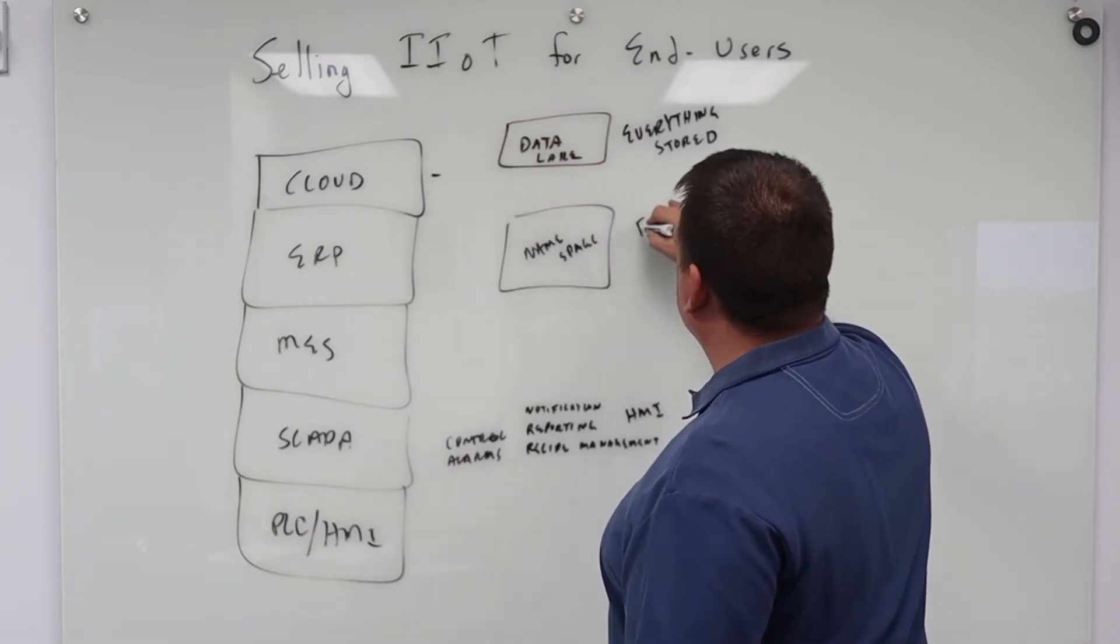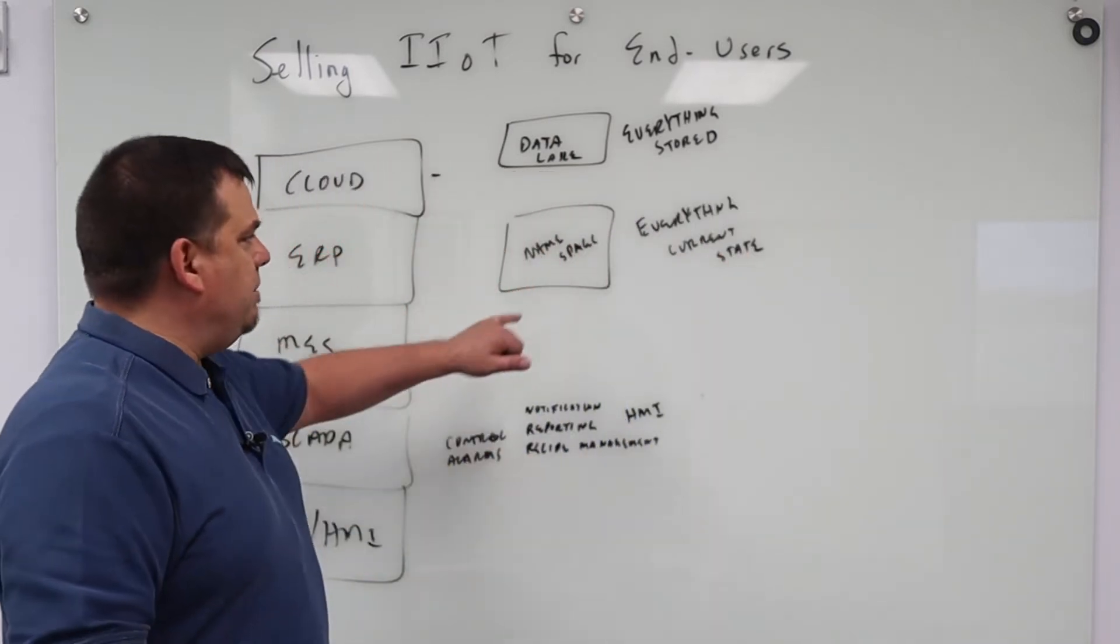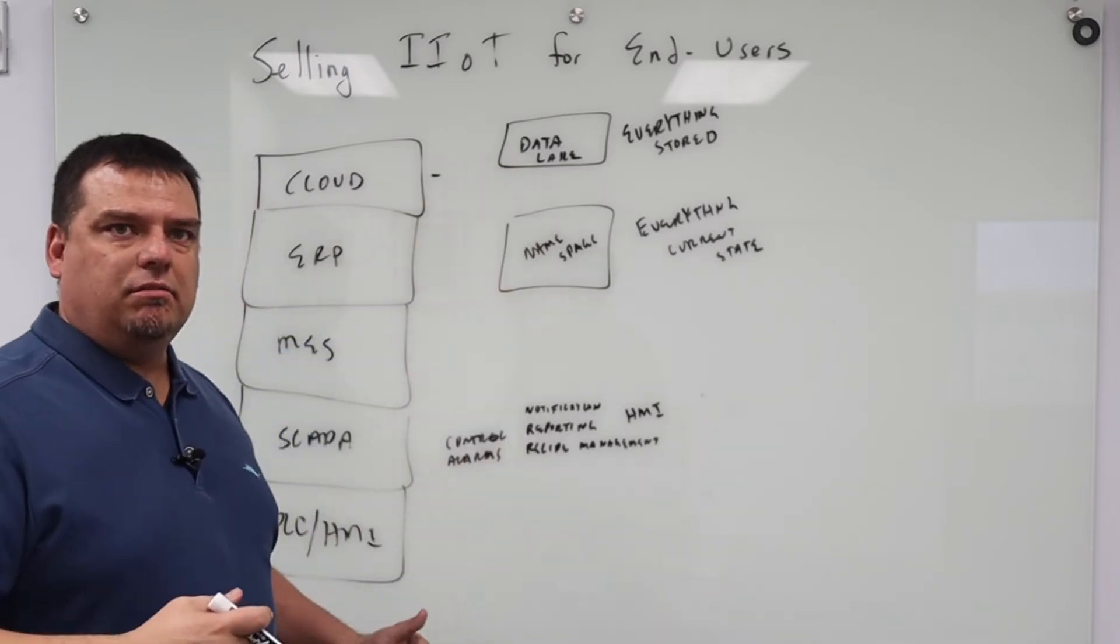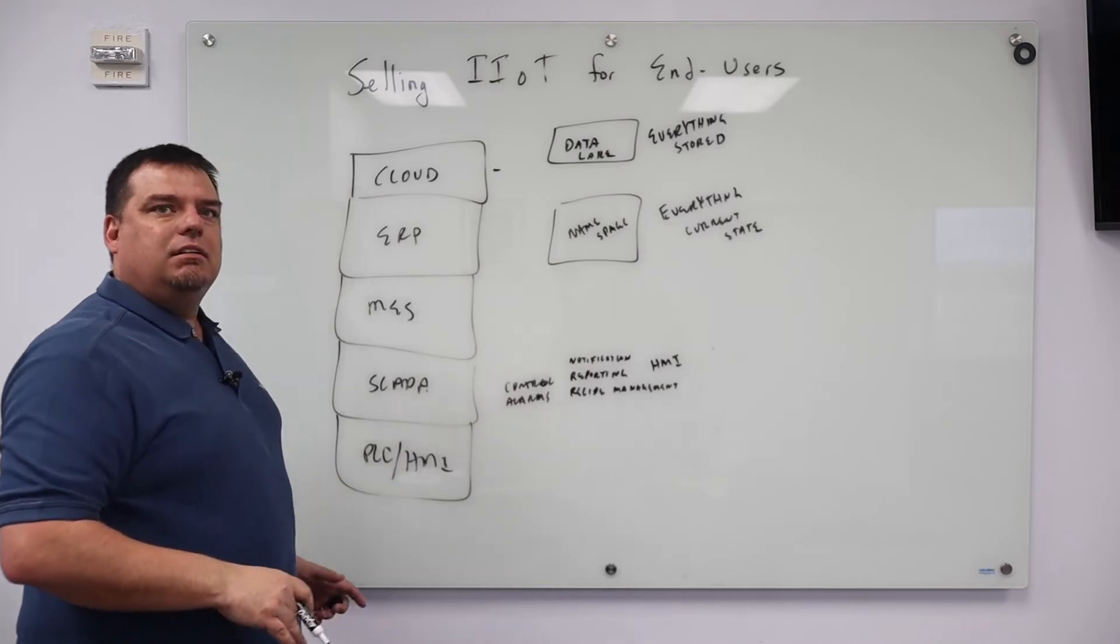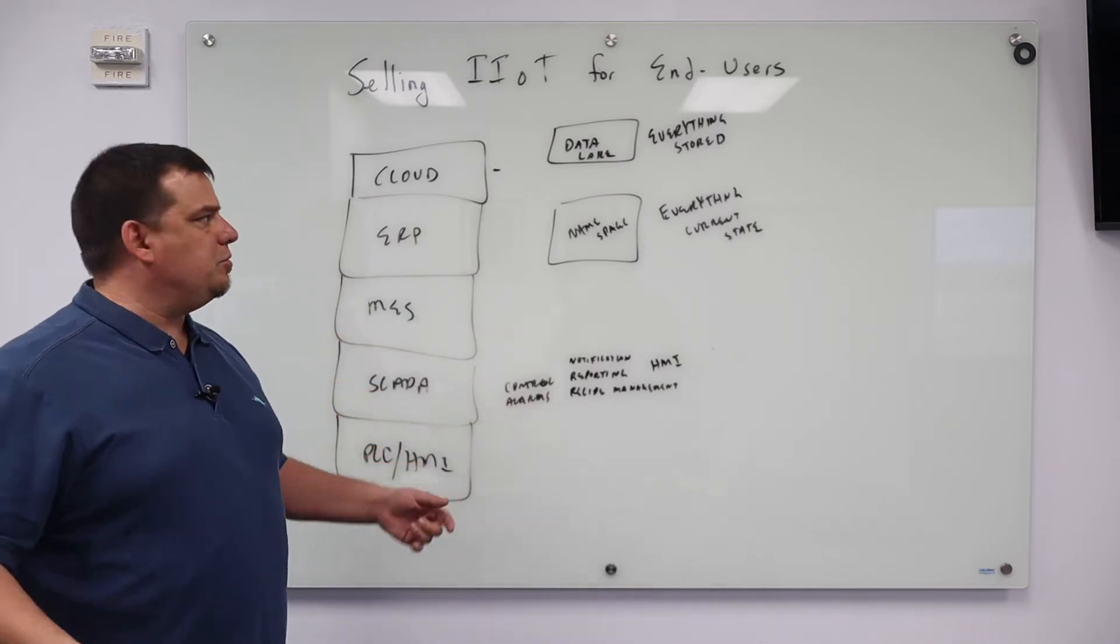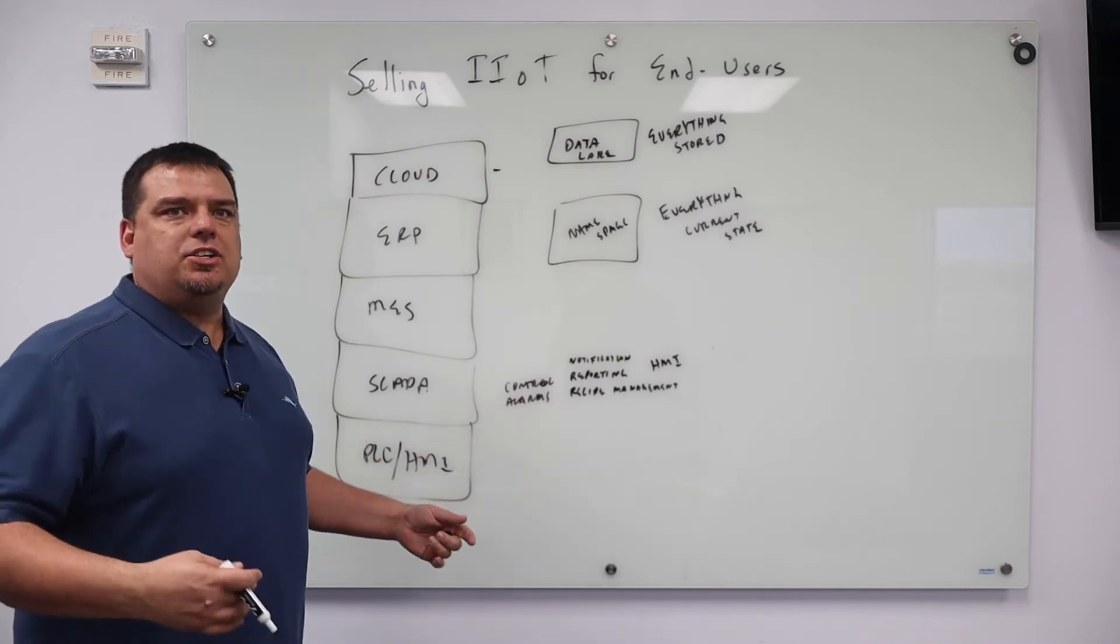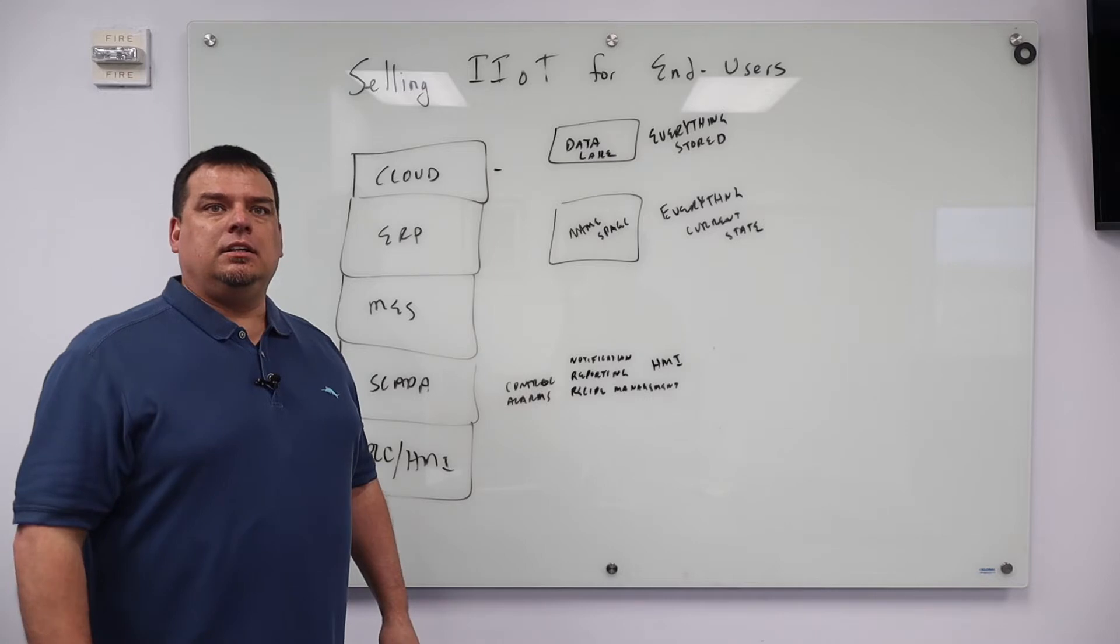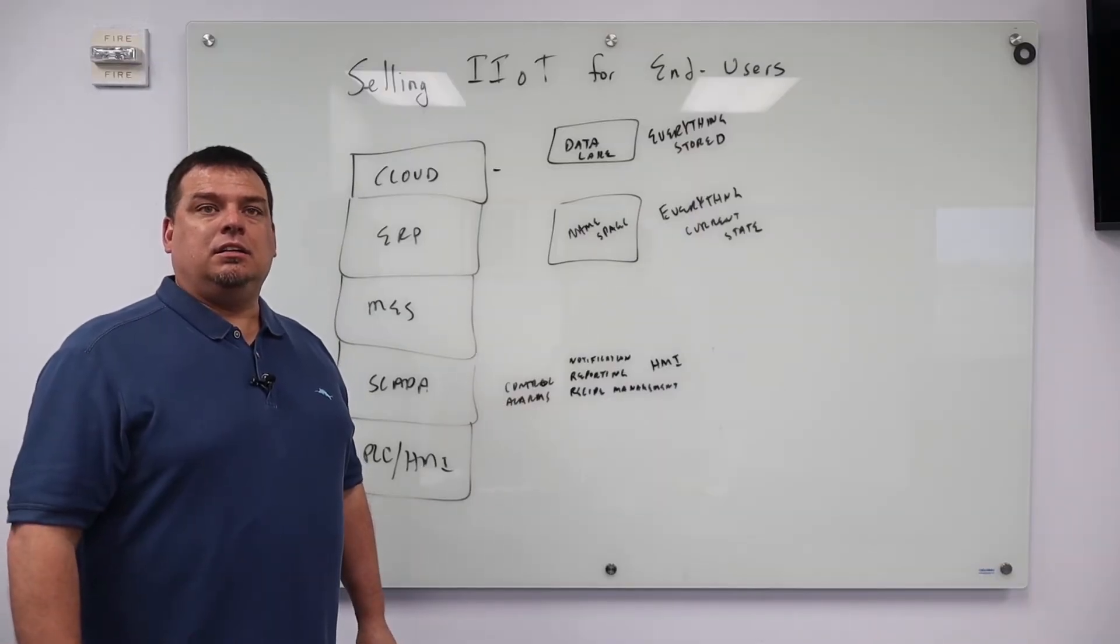I'm also going to have a unified namespace. This is everything current state. I'm going to have a unified namespace that's everything current state and I'm going to have a data lake that's everything stored. So what is SCADA's role going to be 10 years from today or 20 years from today when this is our architecture? That is, I have a location. What information gets stored in the data lake?